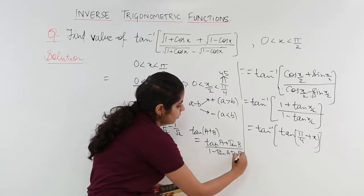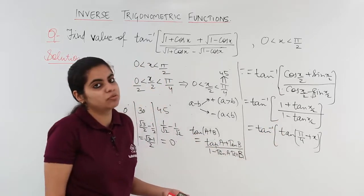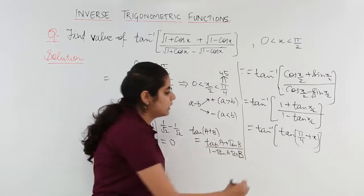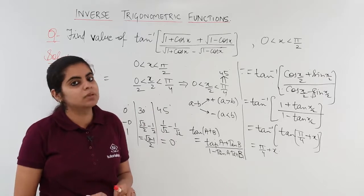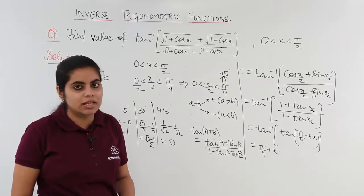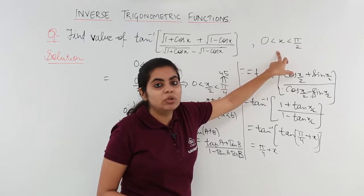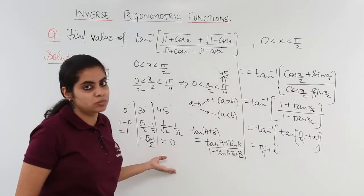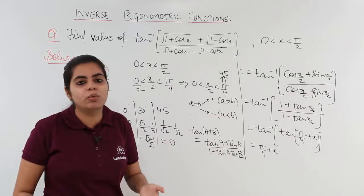So the final answer is π/4 + x/2. This is a lengthy problem based on the concept of principal value branch. The key to solving these types of questions is using trigonometric formulas to simplify, and carefully finding the range for x/2 when x is given. In the next video, we will see the next numerical problem — the same question but with a different range of x, which changes the whole solution.